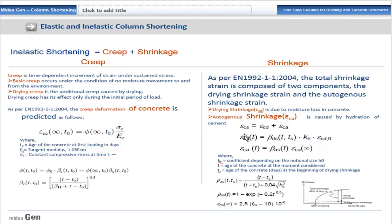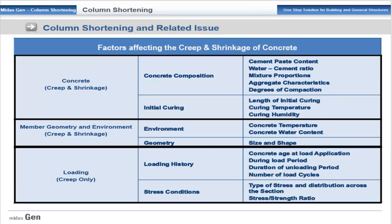The notional size of elements comes into picture here. The factors affecting creep and shrinkage include material factors such as concrete composition — cement paste content, water-cement ratio, mixture proportions, aggregate characteristics, degree of compaction — and curing parameters like length of initial curing, temperature, and humidity. Member geometry and environmental factors include concrete temperature, water content, and size and shape. Loading factors affecting creep only include loading history, concrete age at load application, duration of loading and unloading periods, number of load cycles, types of stresses, distributions across the section, and stress-to-strength ratio.